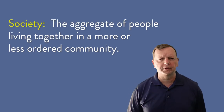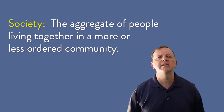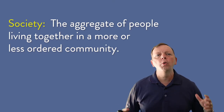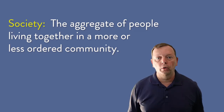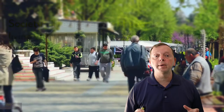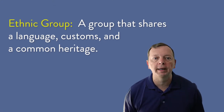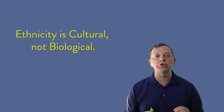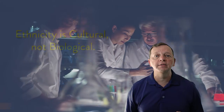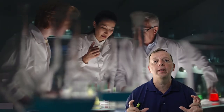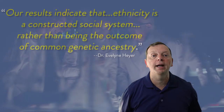Now there are some terms we need to know when we talk about culture. The first is society. The best definition is that this is the aggregate of people — which means all the people — who are living together in a more or less ordered community. When we talk about a society, we're talking about a group of people that have come together and organized themselves, maybe through laws, a family code, or a set of rules. Now within a society, there can be ethnic groups. An ethnic group is a group that shares common customs or common heritage. What is interesting is that ethnicity is a cultural construct — it is not biological. Studies of DNA have revealed that there are more differences within people of an ethnic group than there are between different ethnic groups.